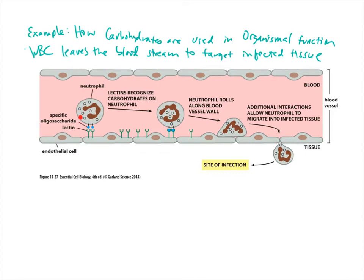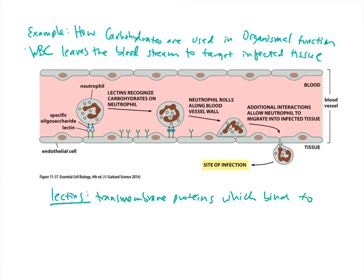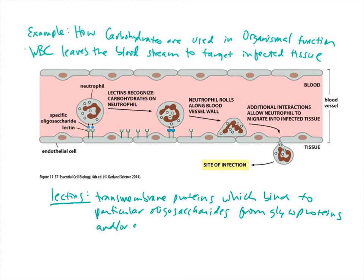An example here is a white blood cell, also known as a neutrophil, rolling along through the blood vessel and starting to roll along the inside of it. The way it does that involves a particular protein-carbohydrate interaction. The really key part of this is lectins — these are transmembrane proteins which bind to particular oligosaccharides, meaning short sugar chains, from glycoproteins and/or glycolipids.